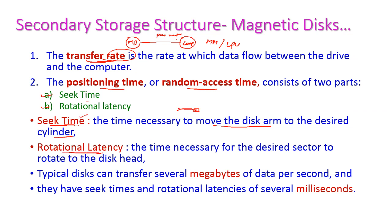The second component is rotational latency — the time taken for the desired sector to rotate under the disk head. The disk spins at high speed, and the disk must rotate until the target location aligns with the read/write head. A typical disk can transfer several megabytes of data per second, with seek time and rotational latency measured in milliseconds.